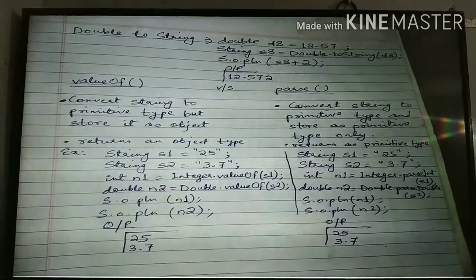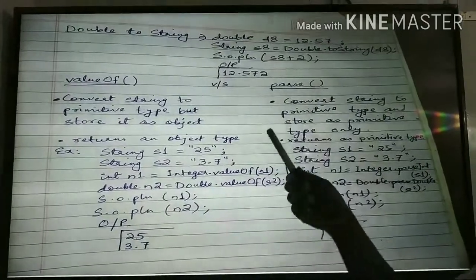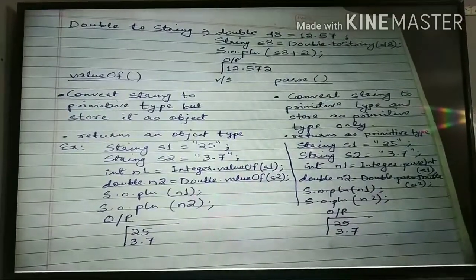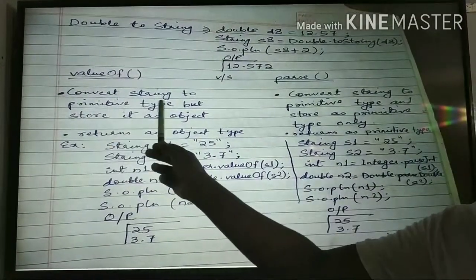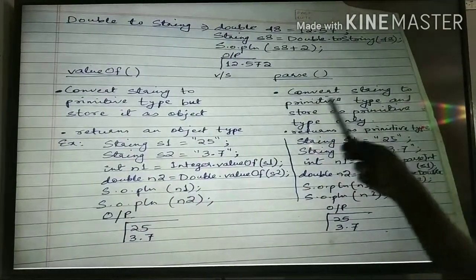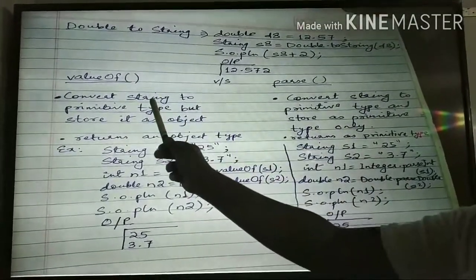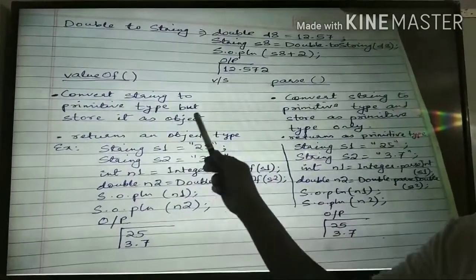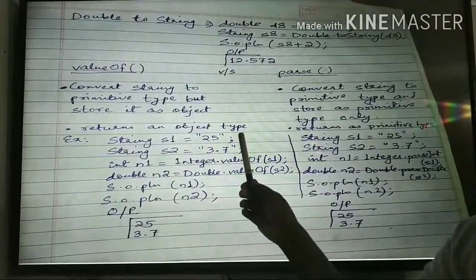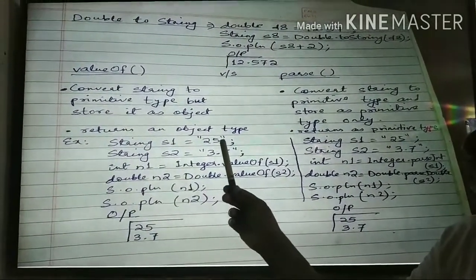Now let's see the difference between the valueOf method and the parse method — such as parseInt, parseLong, parseDouble. The valueOf method converts string to primitive type but stores it as an object type. The parse method also converts from string to primitive type but stores it as primitive type only. So both convert string to primitive type, but valueOf returns an object type while parse returns a primitive type.